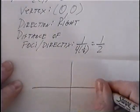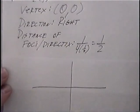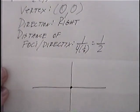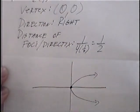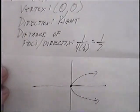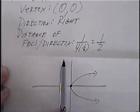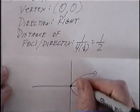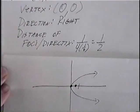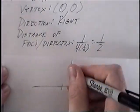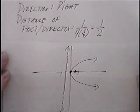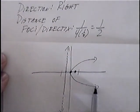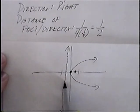To graph this, we can draw the xy axis. The vertex would be in the middle at (0, 0). The direction goes to the right, so instead of either going up or down, the parabola would open to the right. For the foci and directrix, the foci would be a point inside the parabola, and the directrix would be a dashed line outside the parabola. If the distance is 1/2, we'll have a point that's 1/2 units inside the parabola. The directrix would be outside 1/2 and goes up and down. Any point on the parabola is the same distance from the foci as it is from the directrix.